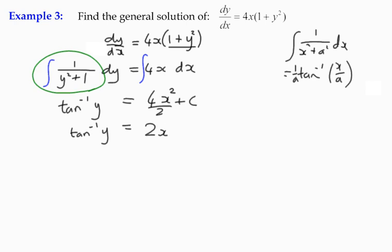And we want just y on its own, so we effectively take the tan of both sides, and in this case, the constant must stay with the 2x squared. We can't leave that as an adding constant at the end.